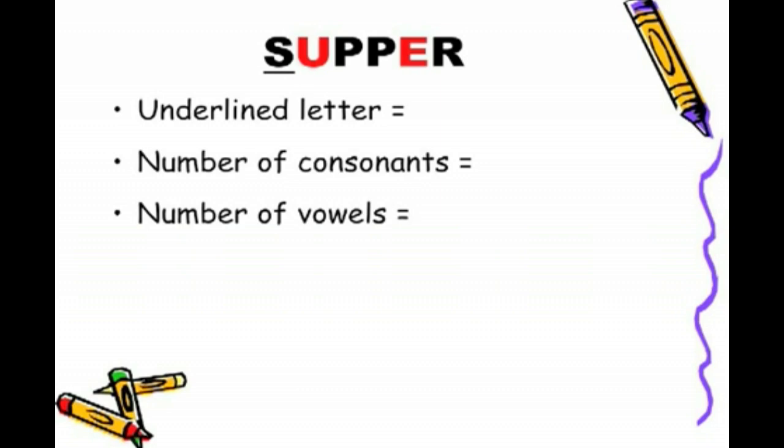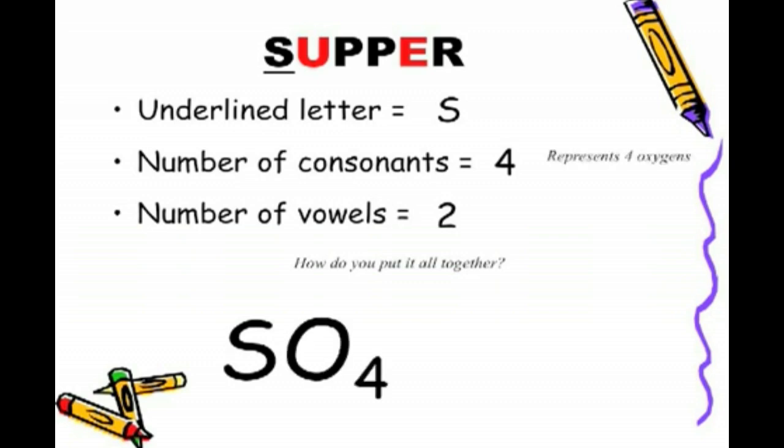Supper. The underlying letter, S. Number of consonants, four. The number of vowels, two. So, how do we put it all together? Start with S. Four consonants, four oxygens, so SO4. Two vowels, two negative charges, negative two, and because we're making reference the sulfur and the ATE ending, we call this entire compound here, SO4 negative two, we call that sulfate.